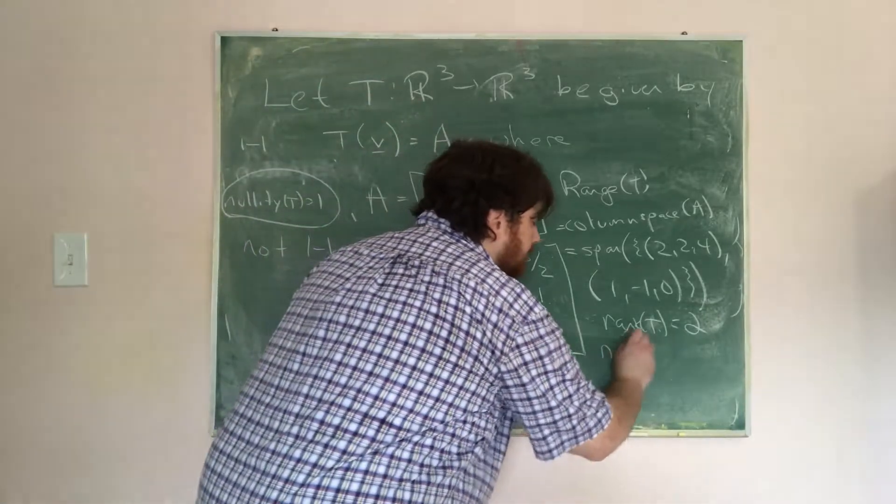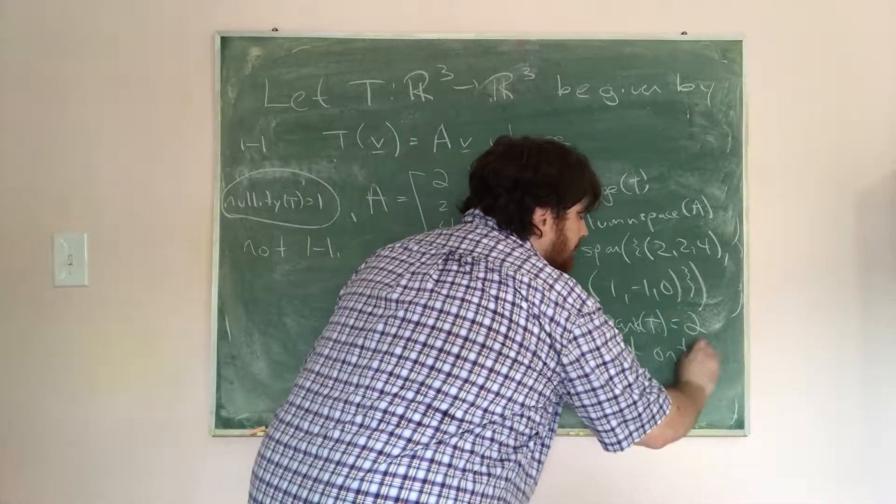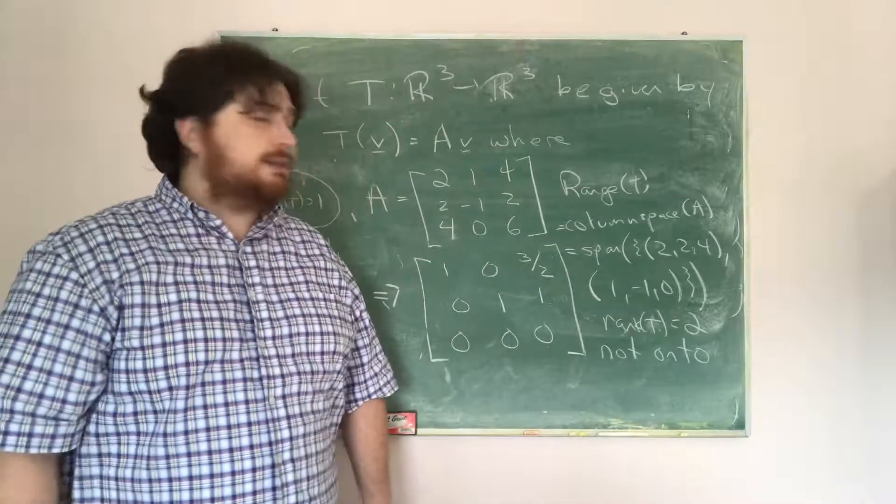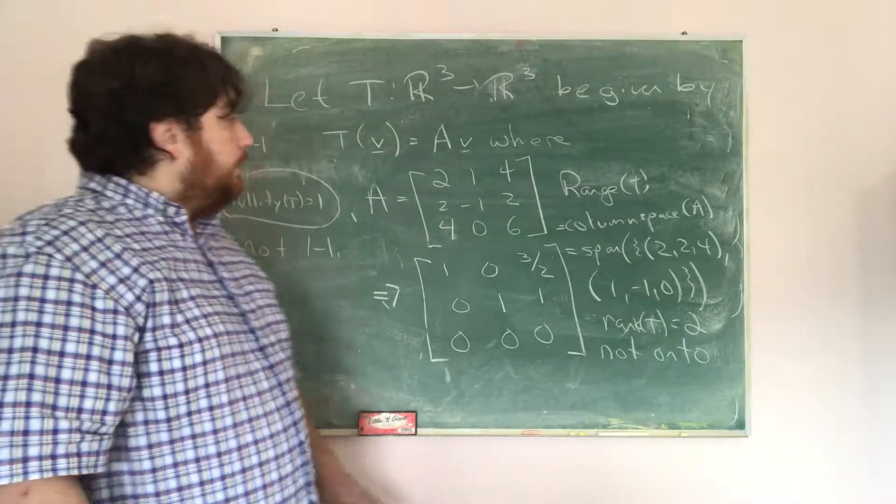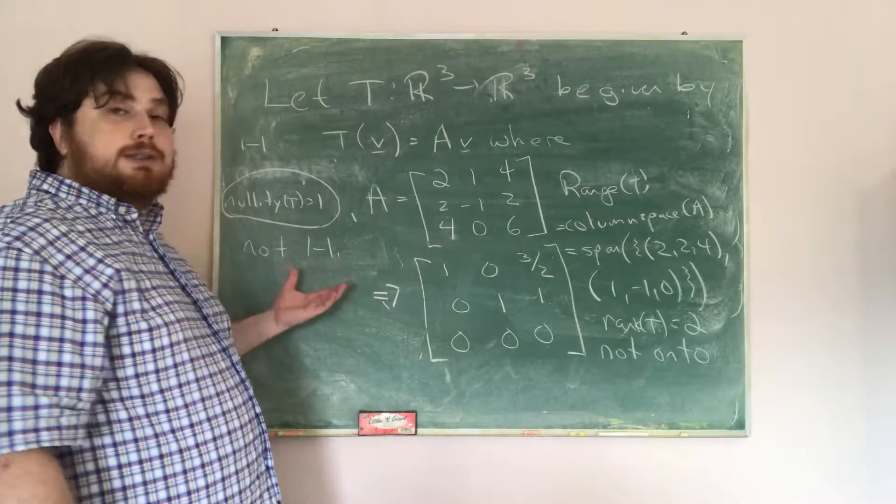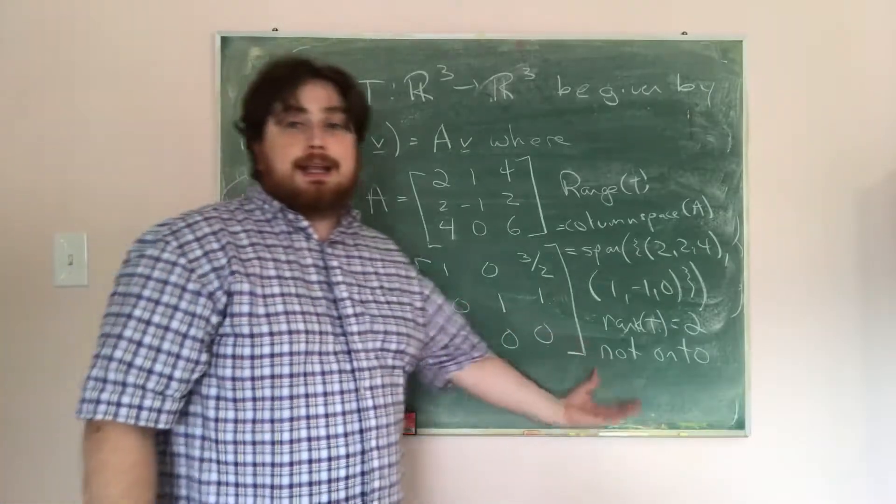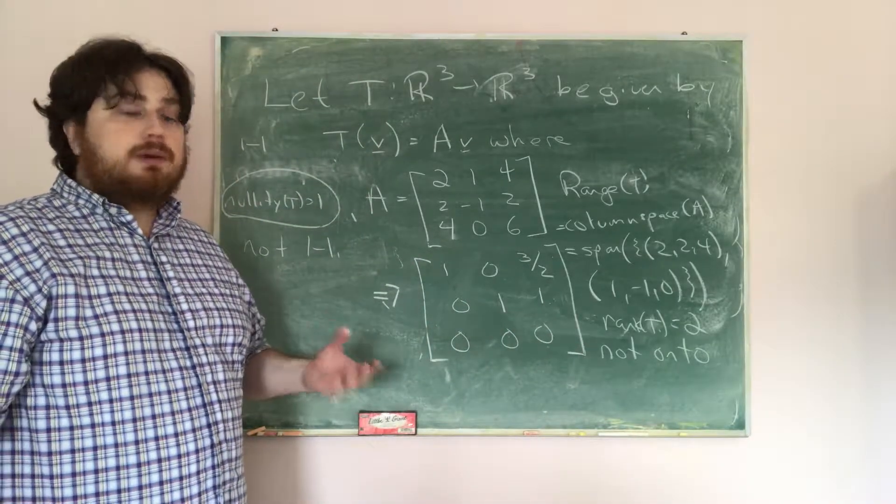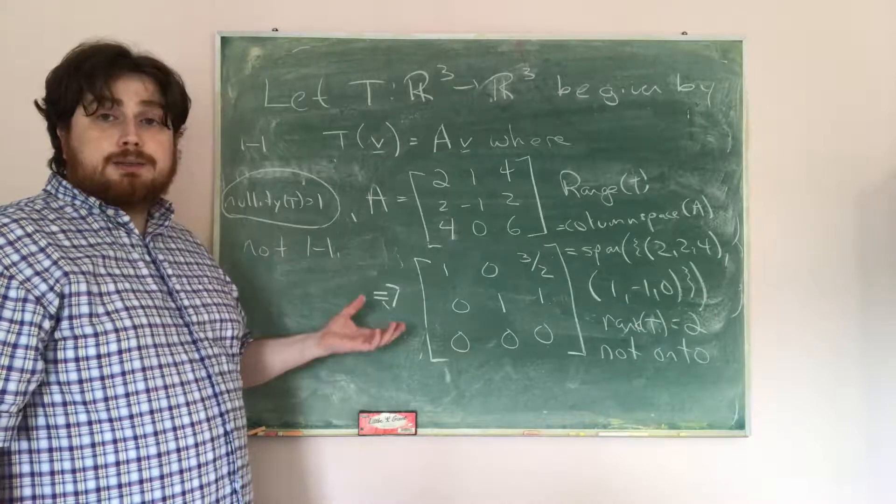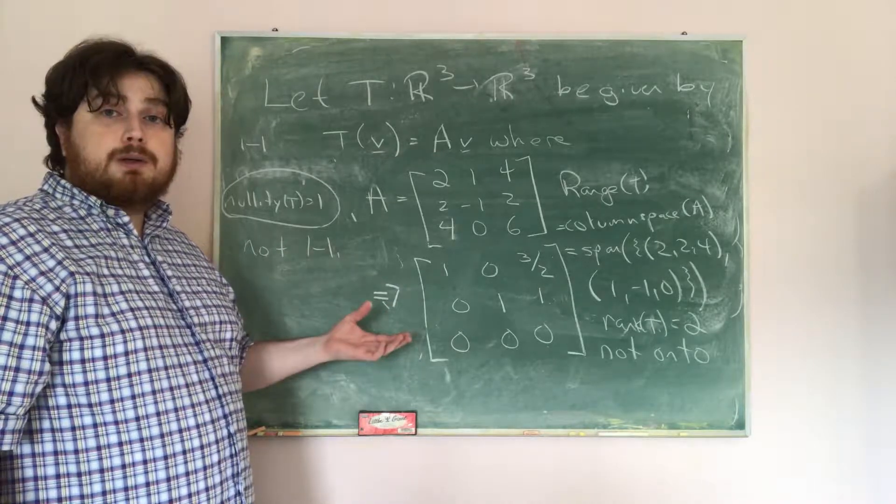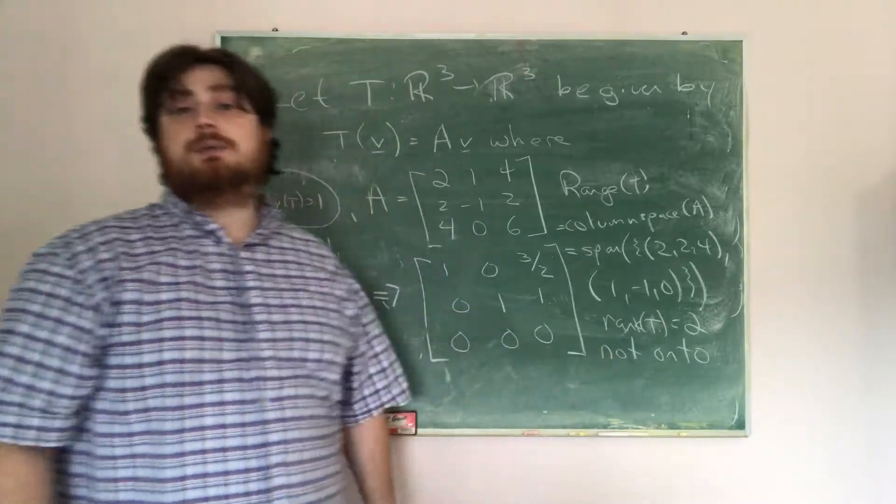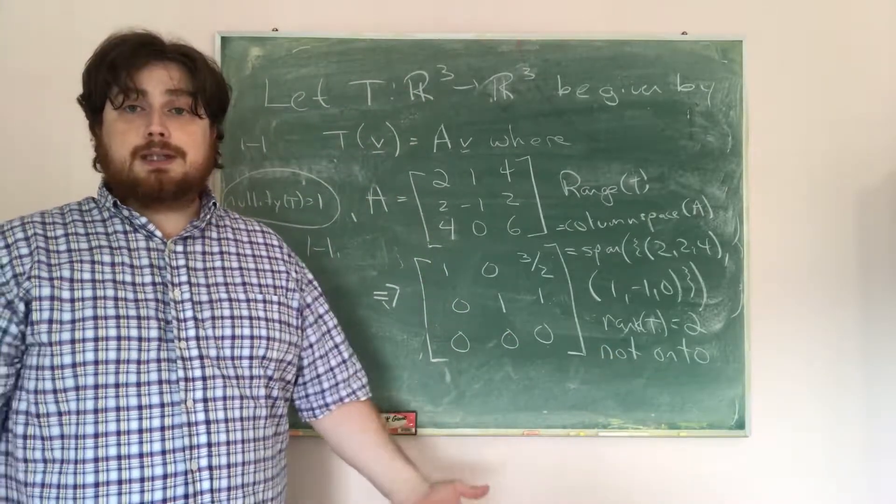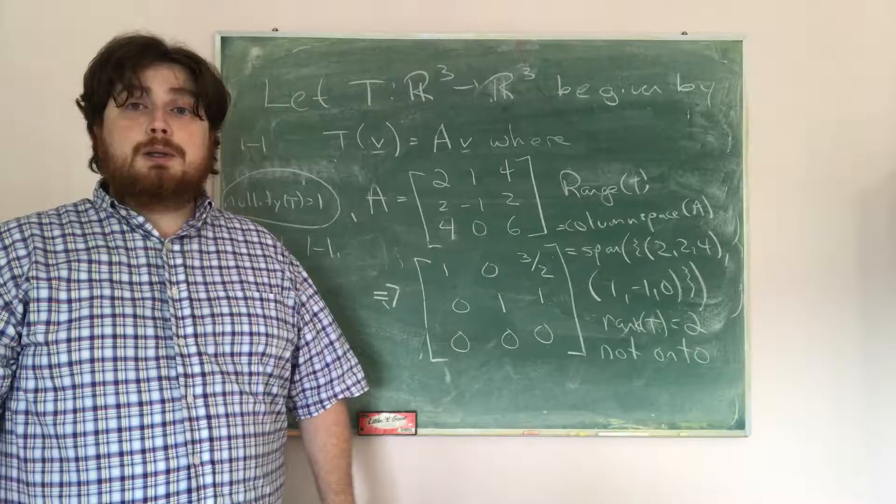Therefore, we get not onto. And again, because the rank is not equal to the number of rows. Now, if we wanted to check for an isomorphism, what we want to check is that it has to be both 1 to 1 and onto. However, since it's not 1 to 1, it's not an isomorphism. We only need 1 to be wrong before it's not an isomorphism, but we could also say it's not onto, so it's not an isomorphism. So therefore, this is not an isomorphism. And so this would be none of the above.